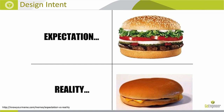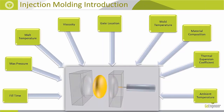From an injection molding standpoint, many things affect how the final part looks: fill time, maximum machine pressure, material composition, gate location, thermal expansion coefficient, and material viscosity. From a mold perspective, pressure settings, packing time, cooling time, and cooling lines all play a role.